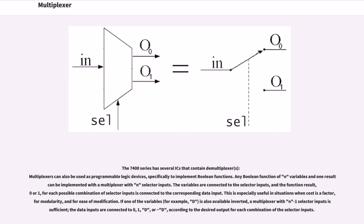If one of the variables is also available inverted, a multiplexer with n-1 selector inputs is sufficient. The data inputs are connected to 0, 1, d, or d, according to the desired output for each combination of the selector inputs.